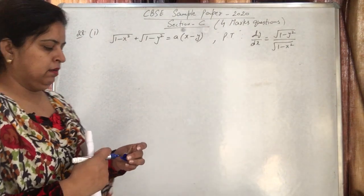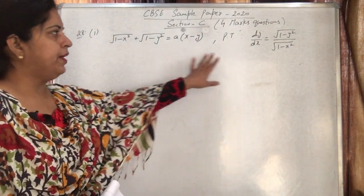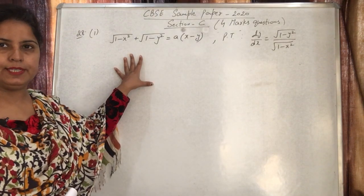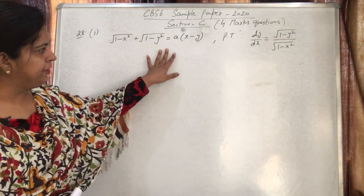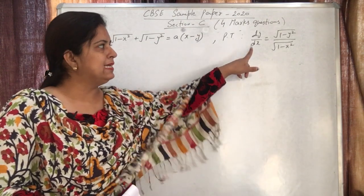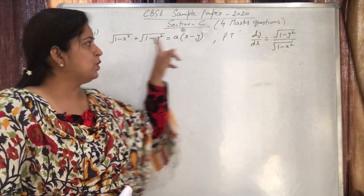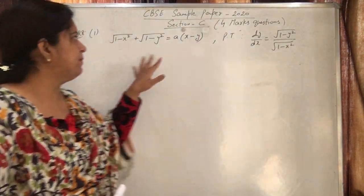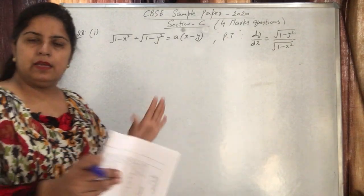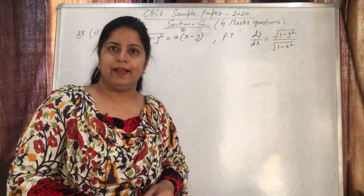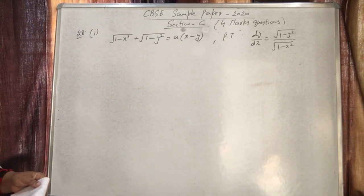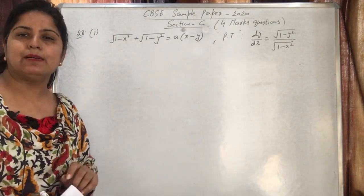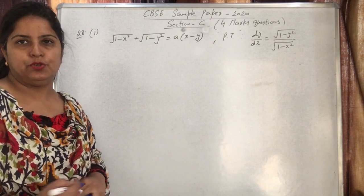We need to find dy/dx from this relation. If we differentiate directly, the answer won't come in this clean form — x and y will be mixed together. Whenever the answer is given and has y only in the numerator and x only in the denominator like this, direct differentiation won't work. So in this case we use substitution.